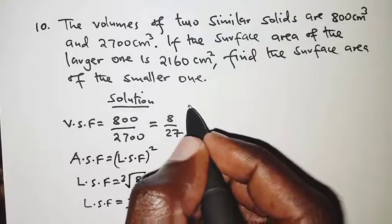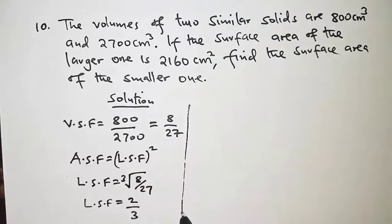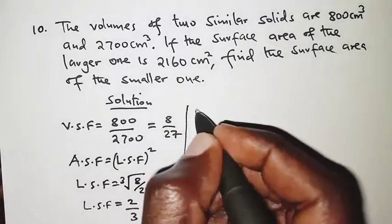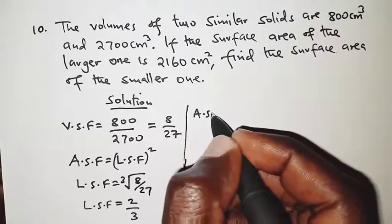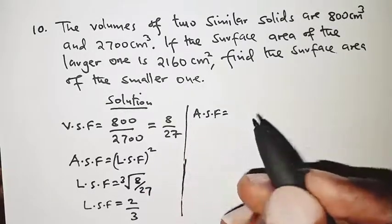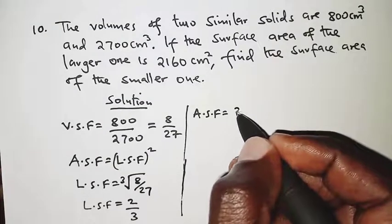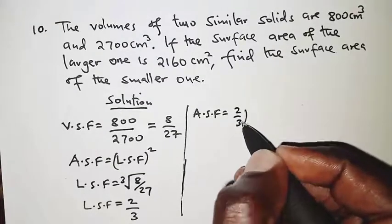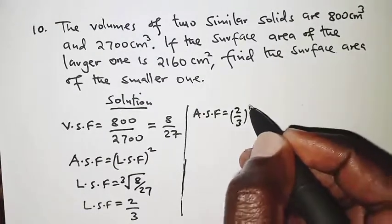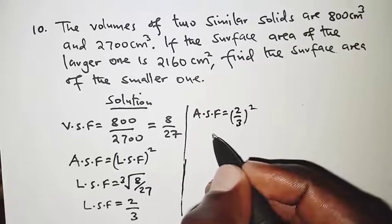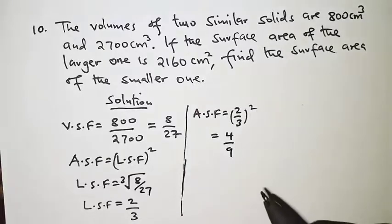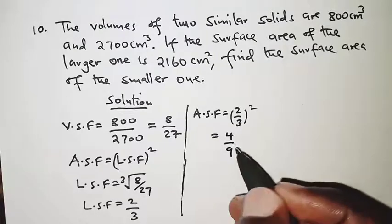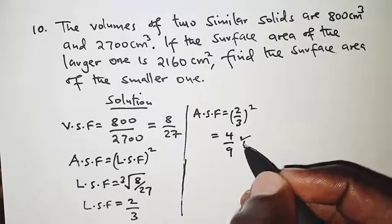From there we can now work out the area scale factor. The area scale factor is just the linear scale factor squared: 2 over 3 squared, which gives us 4 over 9.